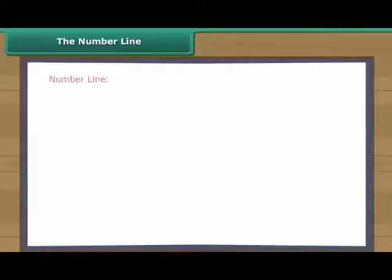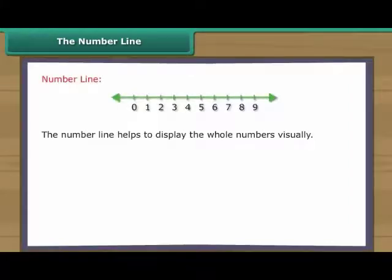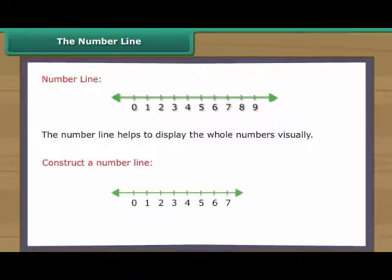The number line helps to display the whole numbers visually. To construct a number line, we simply draw a straight line and choose any point on the line and label it 0. This point is called the origin.